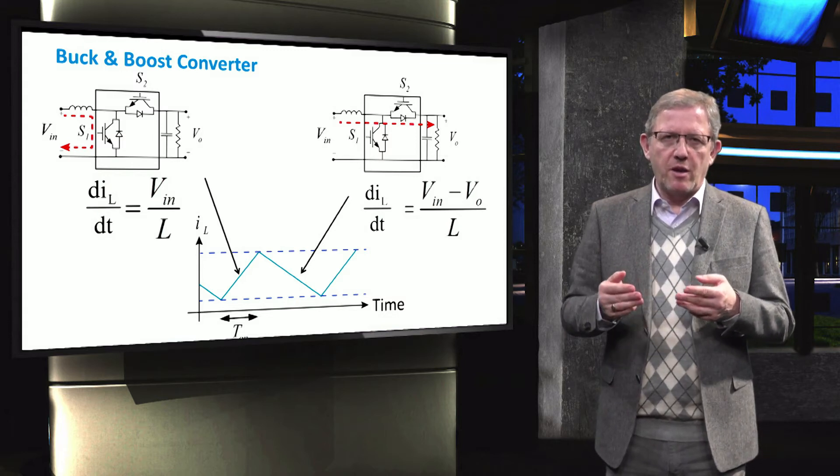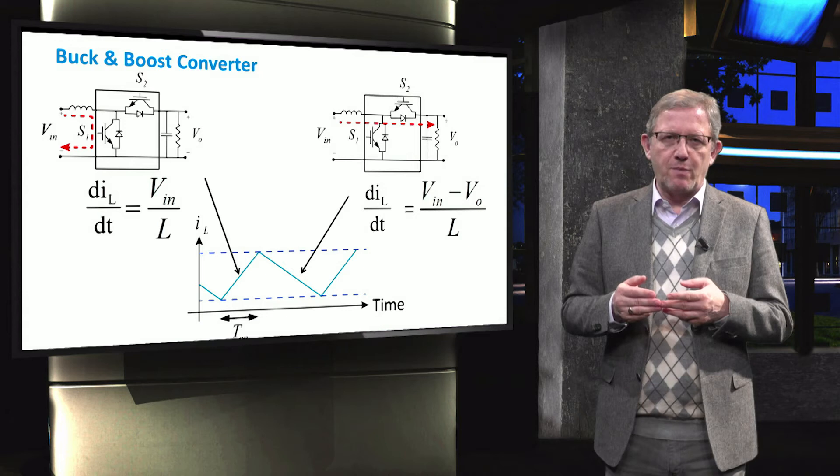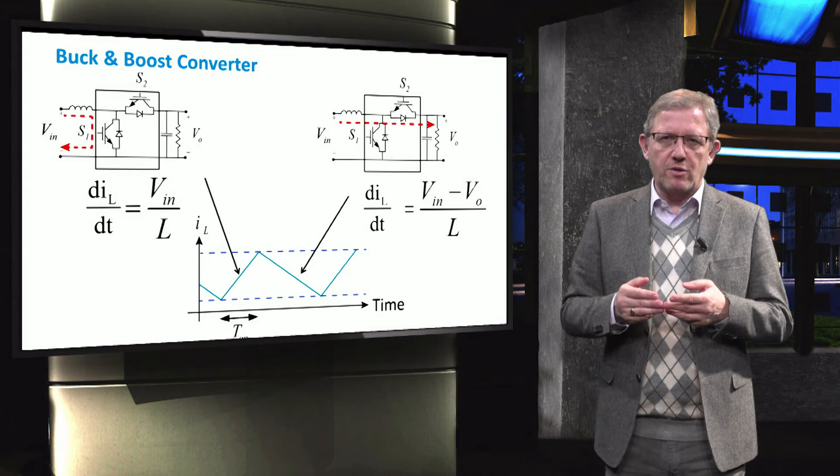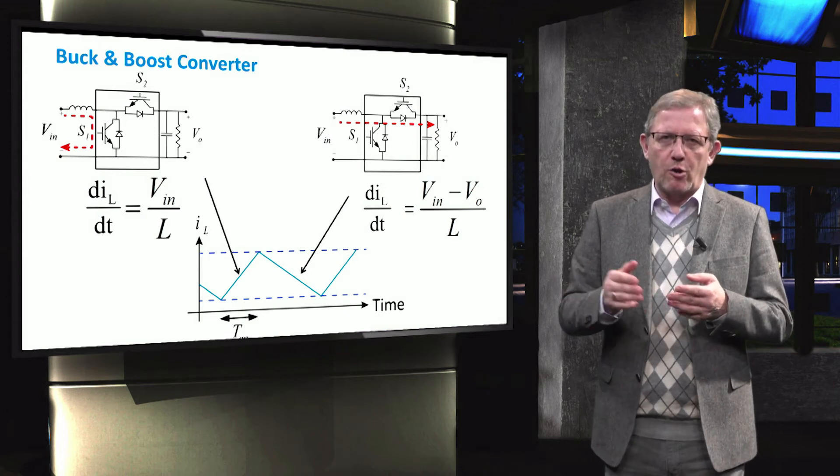During the on-time period, the inductor current derivative depends on the input voltage, while during the off-time period, the derivative depends on the difference of the input and output voltage.